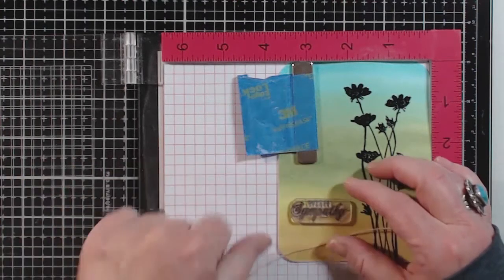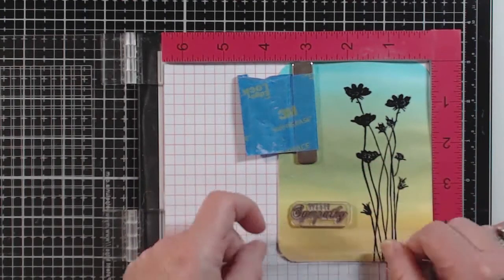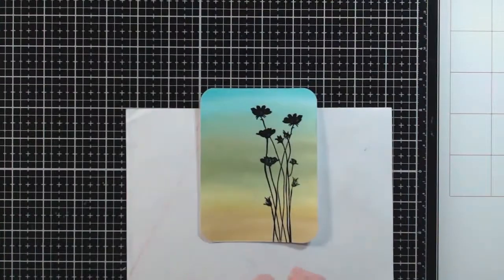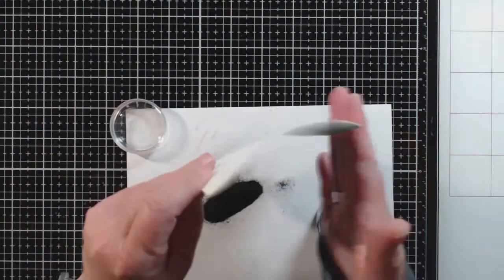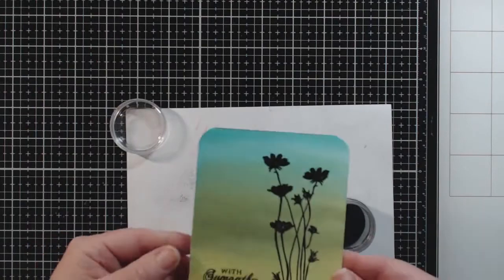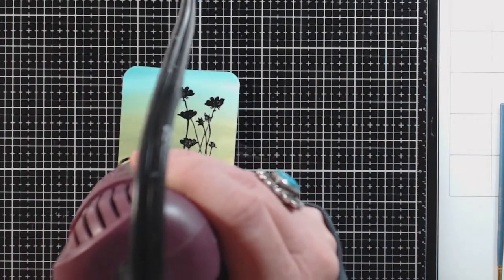I'm using the twine here just to kind of get a feel for where things are and if it's where I want it. I'm going to go ahead and emboss that sentiment in the same black embossing powder that I used earlier. I'm going to clean it up with the brush before I hit it with the heat tool.